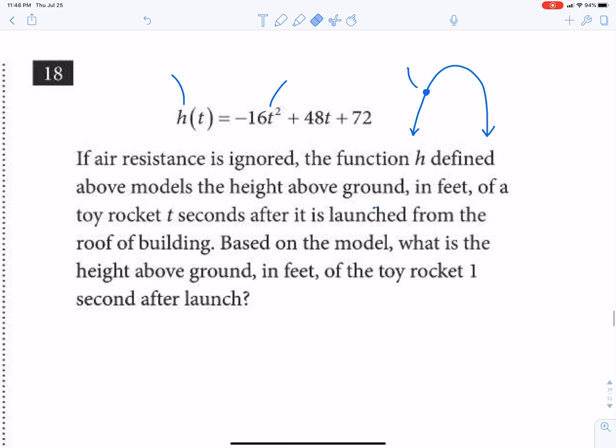All this question asks is to find what is the height above the ground in feet of the toy rocket one second after launch. So all you have to do is plug in 1 for t, and that's going to be -16 plus 48.